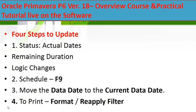The steps to update your schedule: you're going to enter the actual dates and update the remaining durations — many people in the market don't update the remaining duration, but it is very important. You also have to check the logic for any logic changes. After that you can press F9 to schedule and get the early dates and the CPM end date. You have to move the data date to the correct current date, and then you can print your report for the project manager to review.